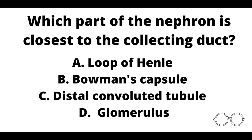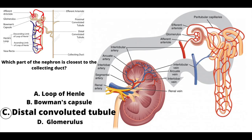Question number three. Which part of the nephron is closest to the collecting duct? A: loop of Henle. B: Bowman's capsule. C: distal convoluted tubule. Or D: the glomerulus? Our answer here is C, the distal convoluted tubule.